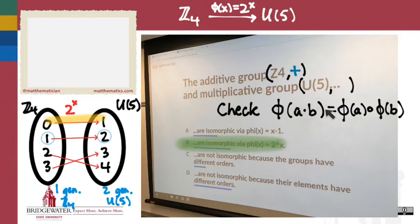If I wanted to check the product rule, the operation in A·B is the operation in Z4, which is addition. But the operation on the right-hand side is the operation of my range group U(5), which is multiplication. So let's rewrite this formula. In place of the symbol between A and B, I want a plus. And in place of the circle on the right-hand side, I want multiplication. Now remembering that my function is the 2^x function, what does this look like? What would φ(A+B) be?